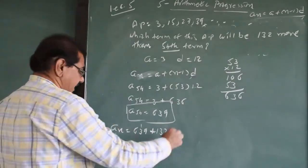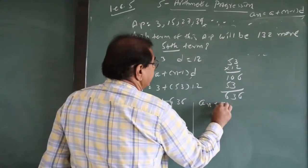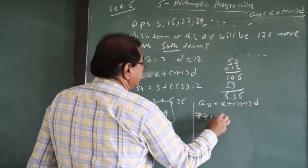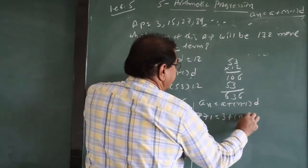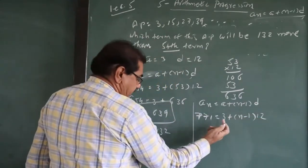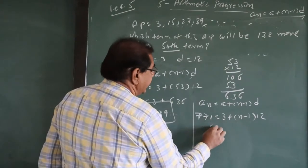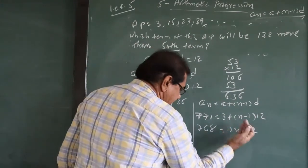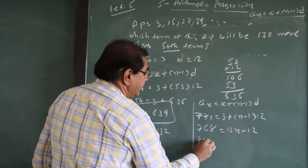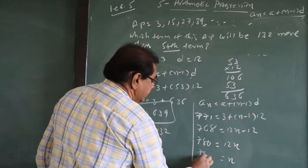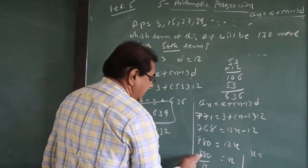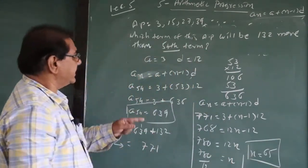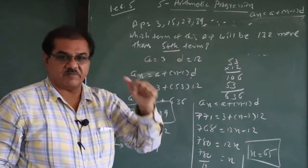Which term is 771? Using AN = A + (N-1) × D: 771 = 3 + (N-1) × 12. So 771 - 3 = 768 = 12N - 12. Moving -12: 768 + 12 = 780 = 12N. So N = 780 ÷ 12 = 65. The 65th term of this AP is 132 more than the 54th term.